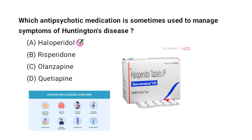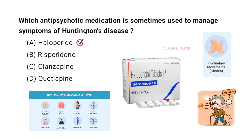Haloperidol is used to manage symptoms of Huntington's disease because it can reduce involuntary movements and agitation. Though it's an antipsychotic medication, its calming effects on the nervous system help control these symptoms, improving the quality of life for patients with Huntington's disease.